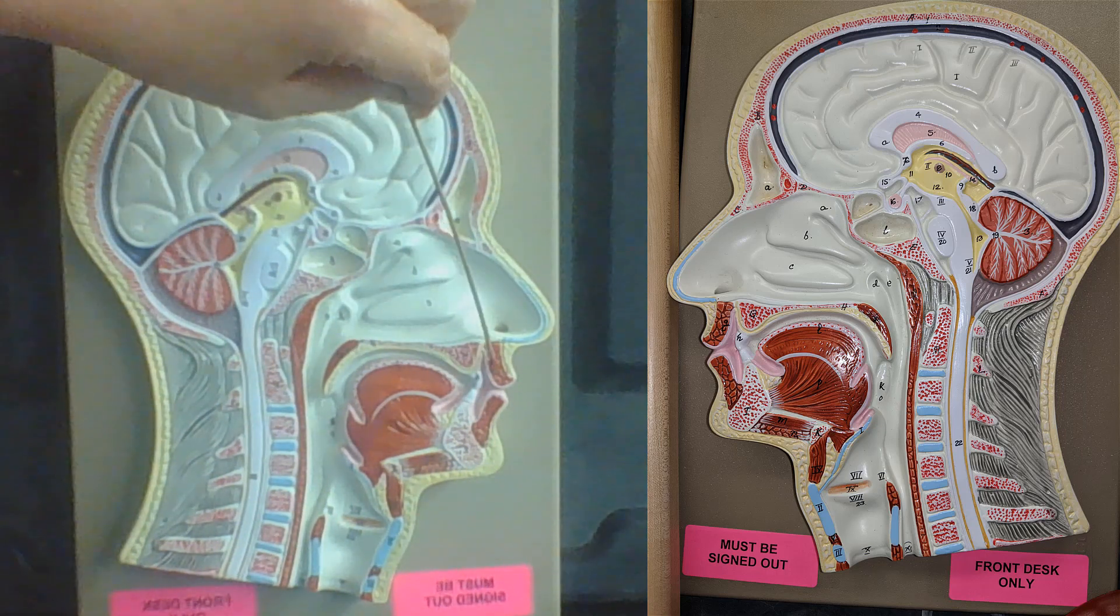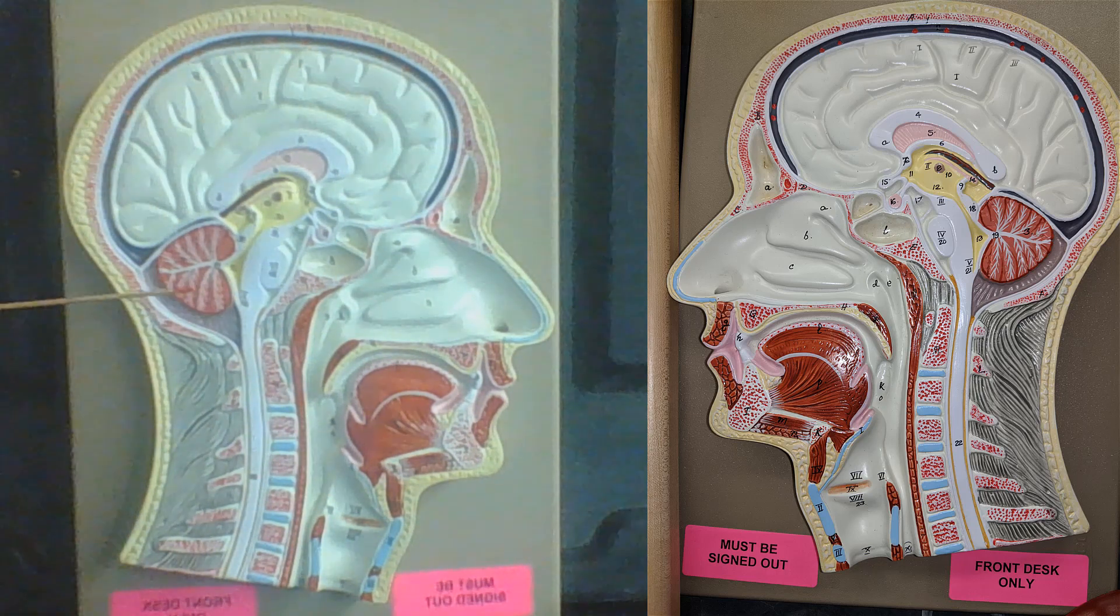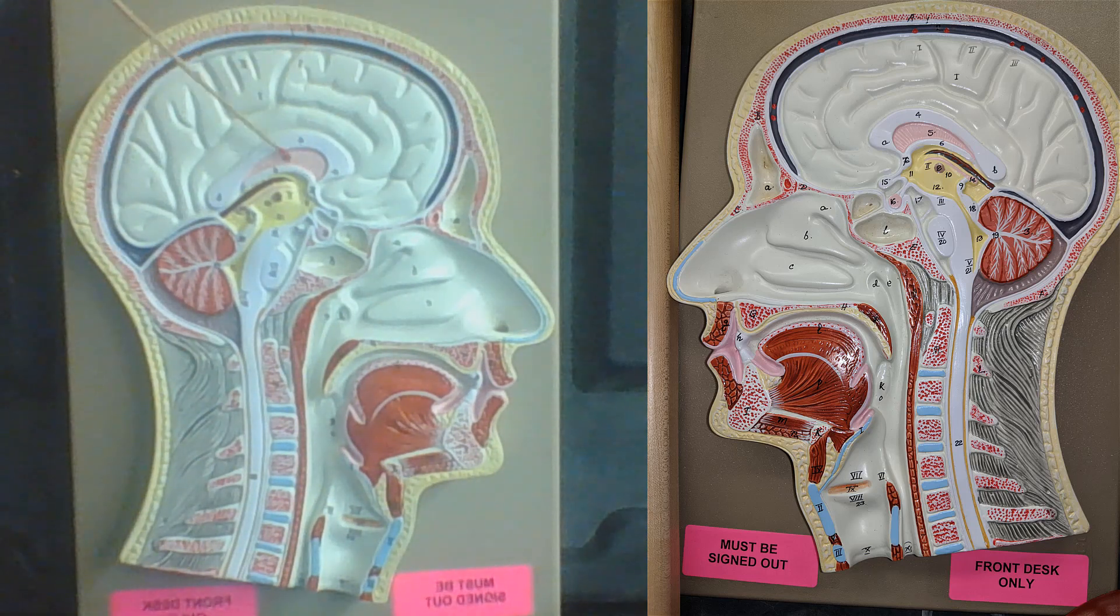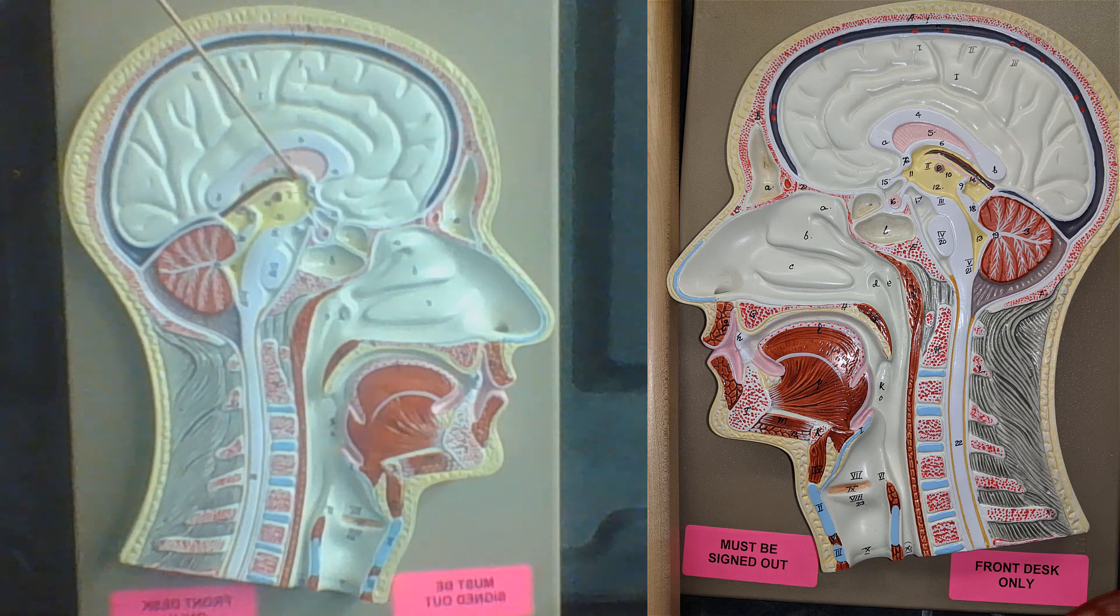So this is the brain. This area of the brain is the cerebrum. This area of the brain is the cerebellum. This is the lateral ventricle. This is the fourth ventricle. Here is the location of the third ventricle. This is the corpus callosum.